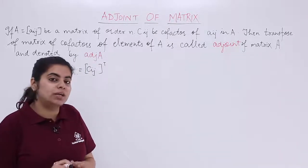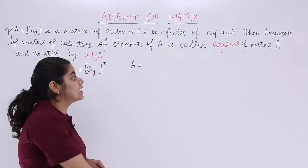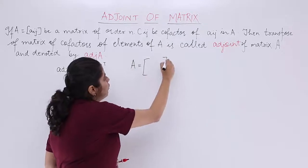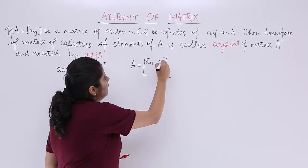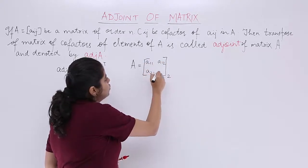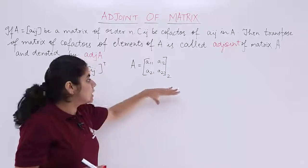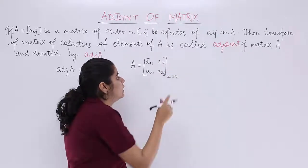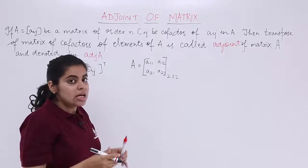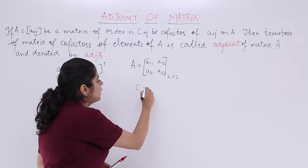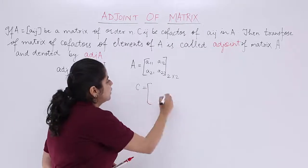Let's see with the help of a theoretical approach. Say I have a matrix A, which is a square matrix of order 2. The elements are a11, a12, a21, a22. This is a 2x2 matrix named A. The cofactor matrix would be denoted by C, and that matrix will have the cofactors.